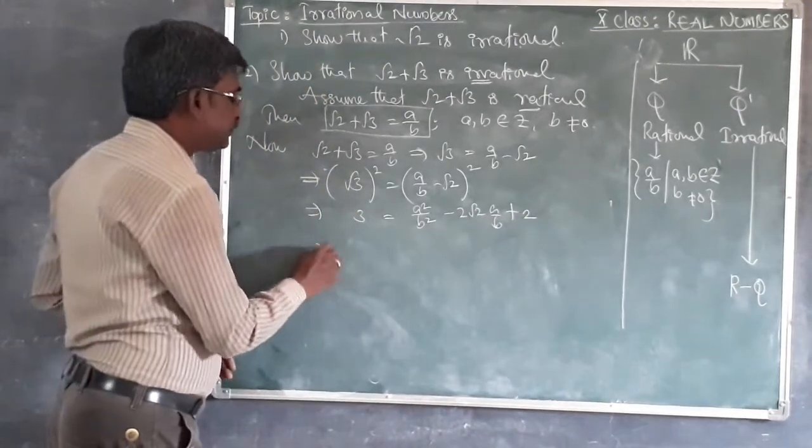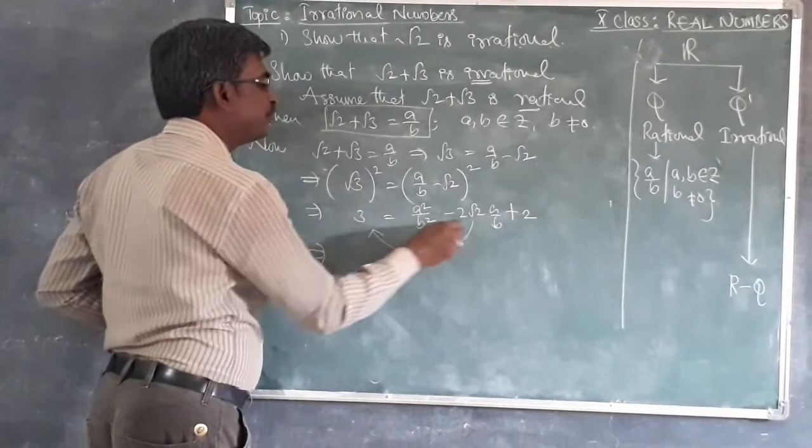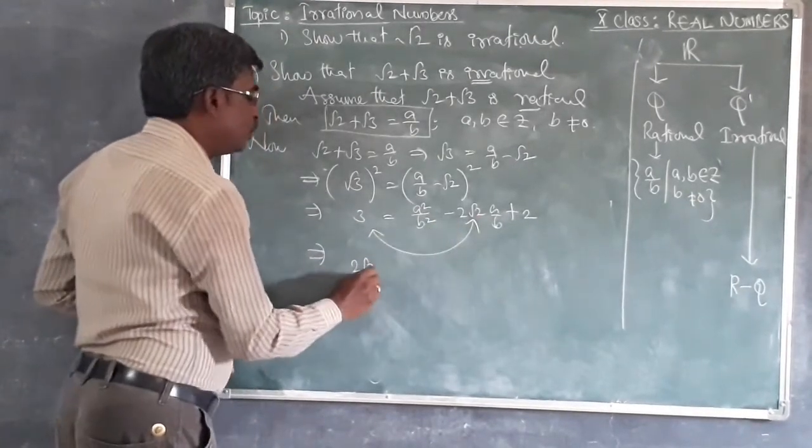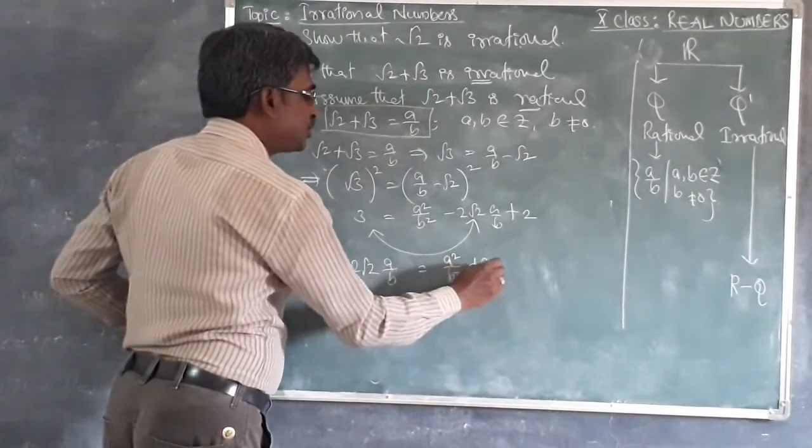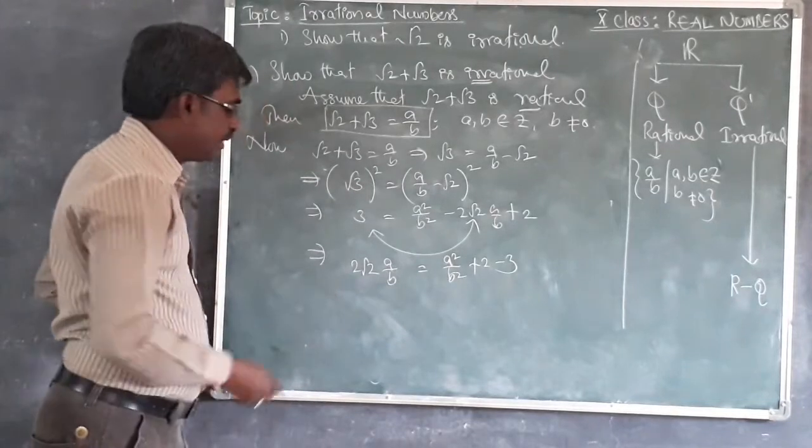Now again let us transpose these two. Then 2 root 2 A by B equal to A square by B square plus 2 minus 3.